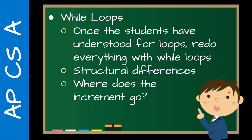Once they master that basic concept, then I go on to while loops — how would we do this with a while loop, and what are the structural differences? One of the big things students have to watch for, especially with regards to multiple choice questions on the AP exam, is where does that incrementor go? Because sometimes i++ comes before a print statement, sometimes after. Sometimes it comes before an if statement, sometimes after. That really changes the output for those multiple choice questions, and they're looking for whether you understand how that affects the output of the program.